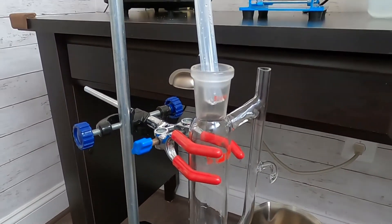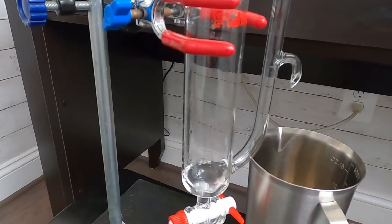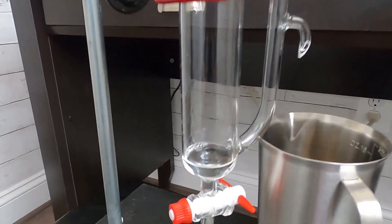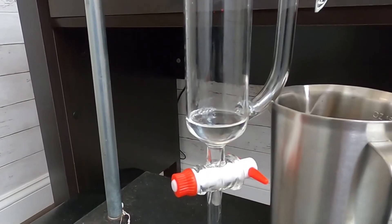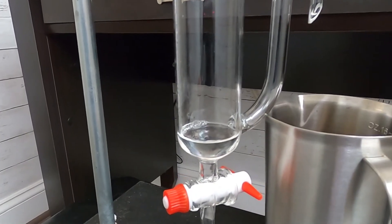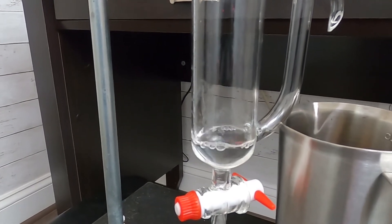When the distillate comes in from the top, it settles here. Because lavender essential oil is lighter, it floats on top of the hydrosol. The hydrosol is the water phase of the distillate.